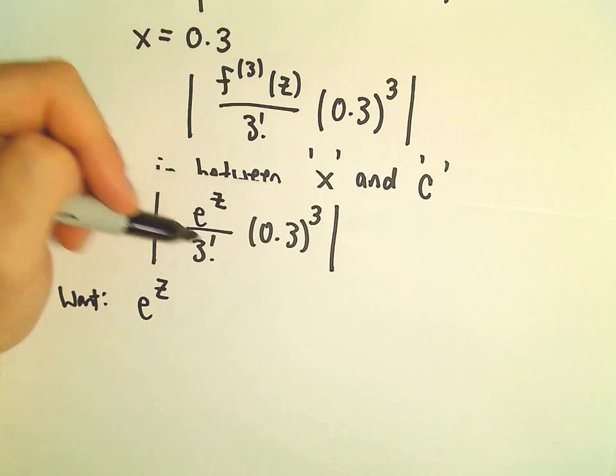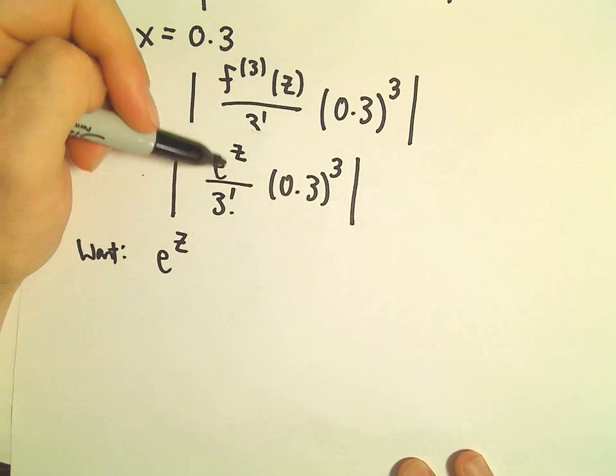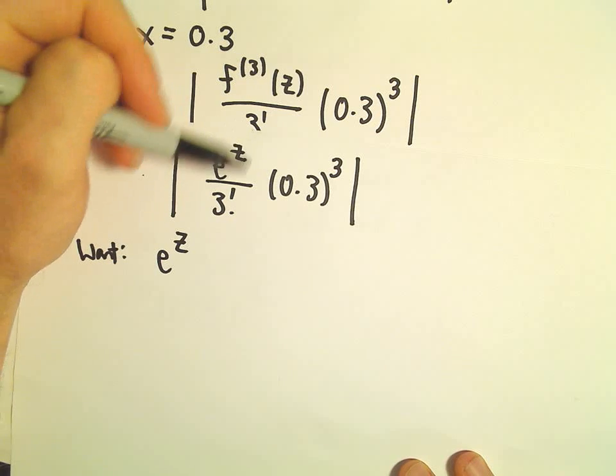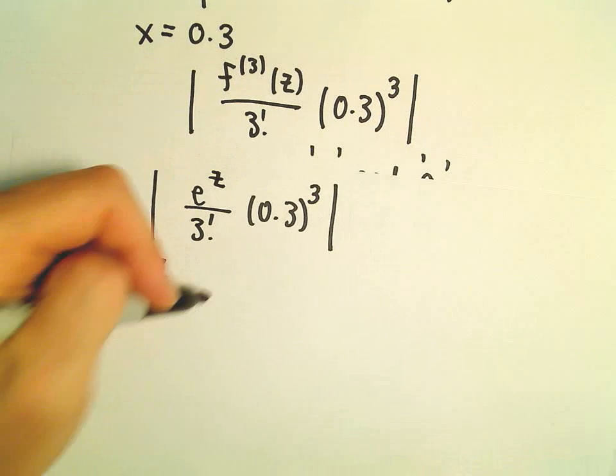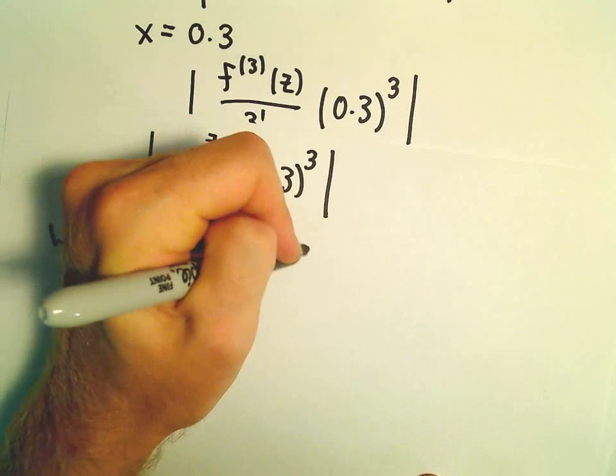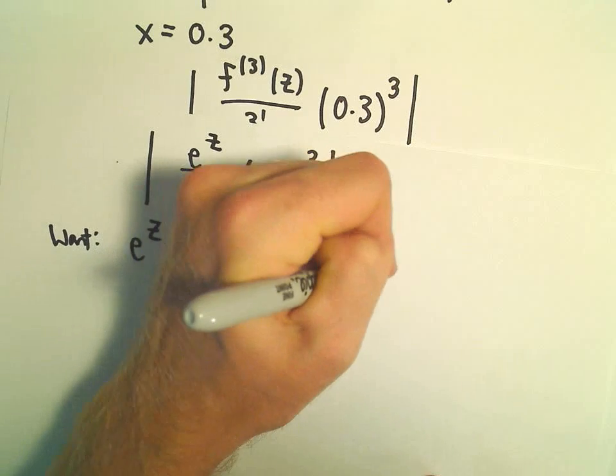And when you're taking values, you have to really think about absolute values. So e to the z is always positive, so in this case we want e to the z to be as large as possible for values in between, basically, the interval from 0 to 0.3.